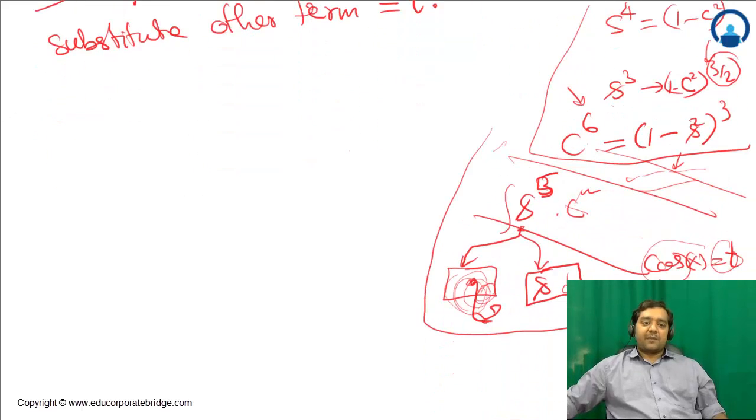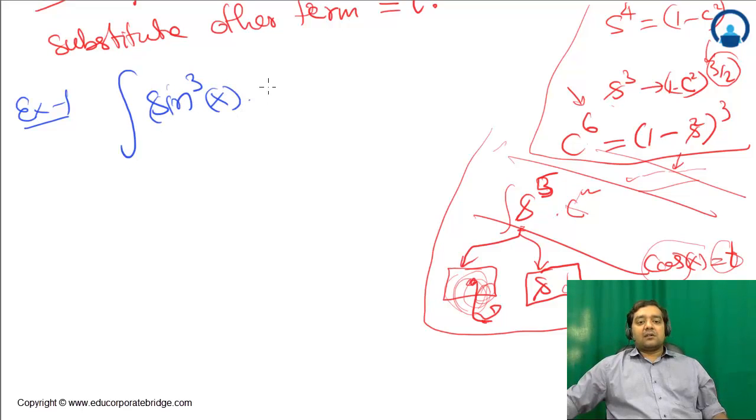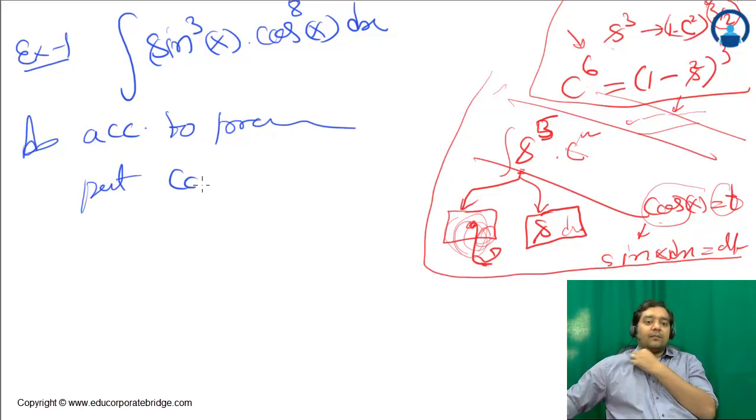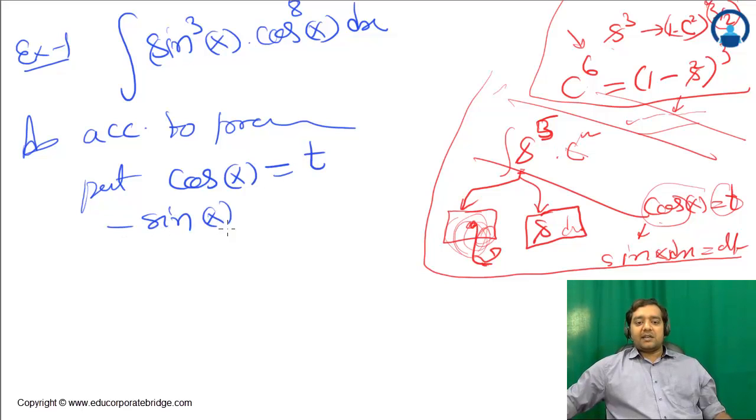Let me take Example 1. Suppose we have sin³(x) · cos⁸(x) dx. In this, odd power is sin, so according to the procedure, put cos(x) = t.